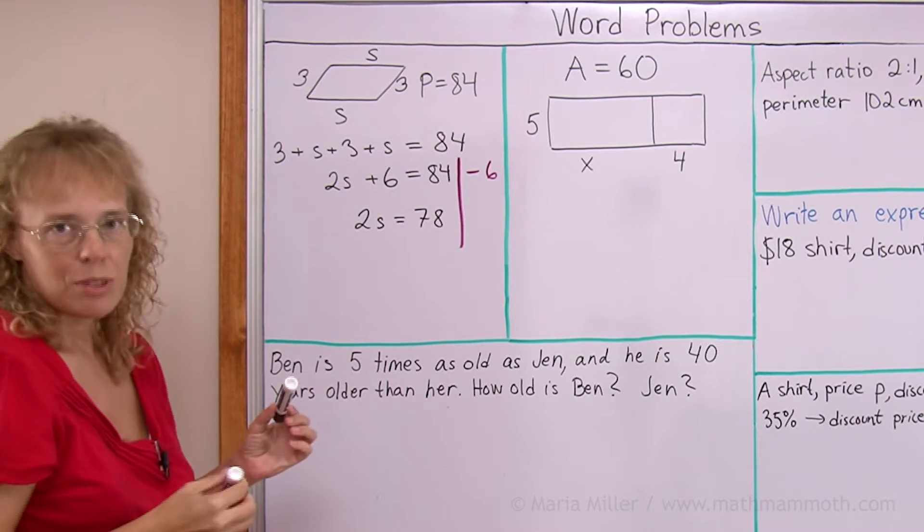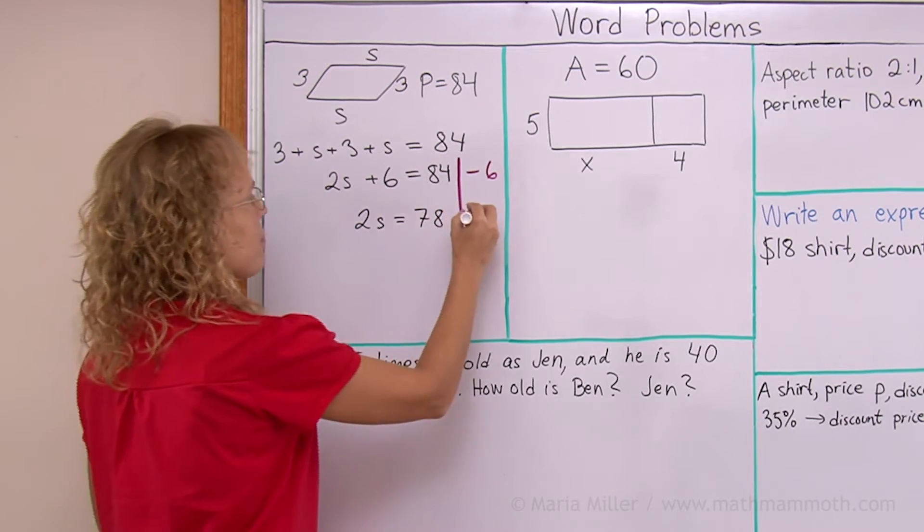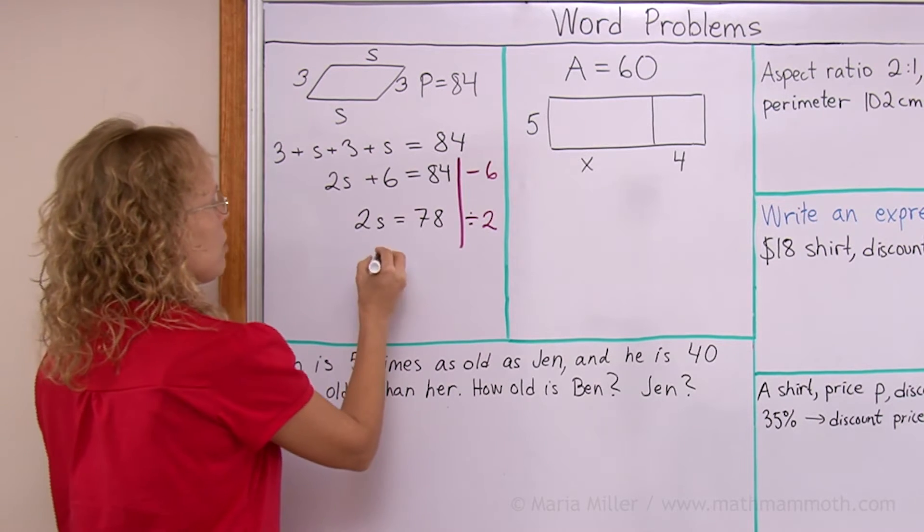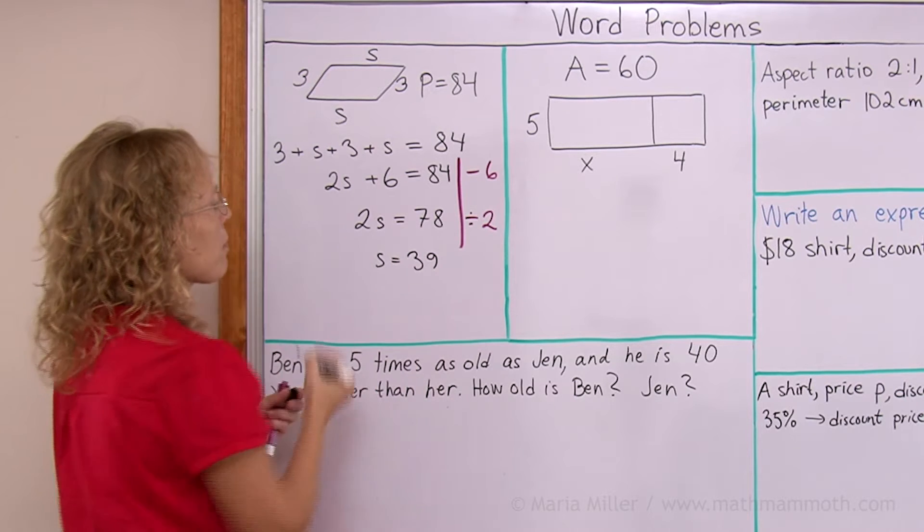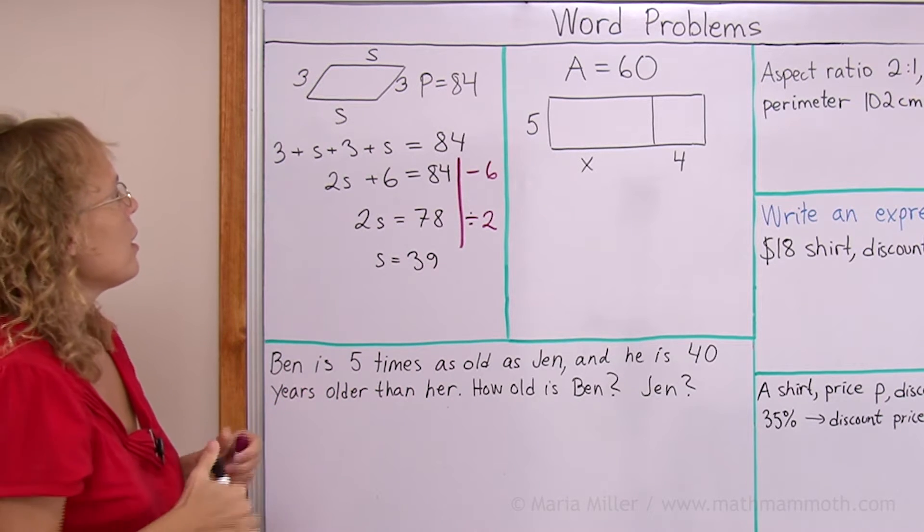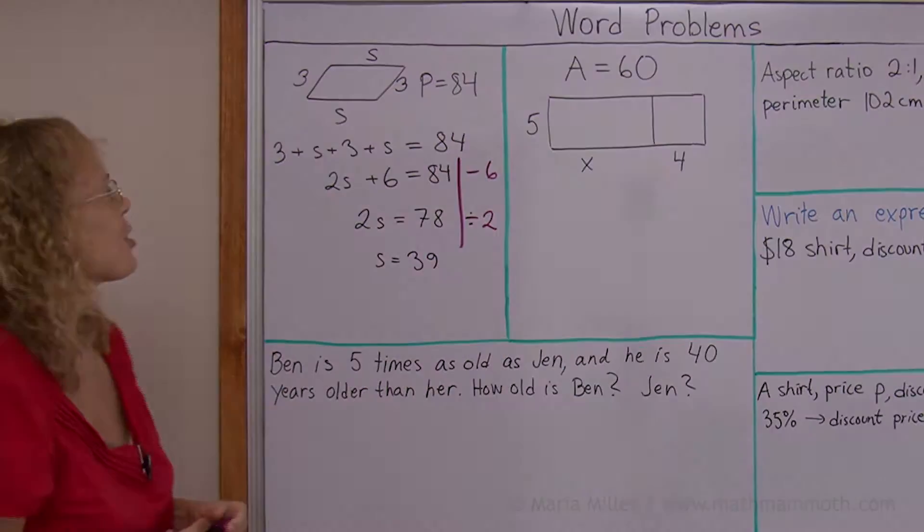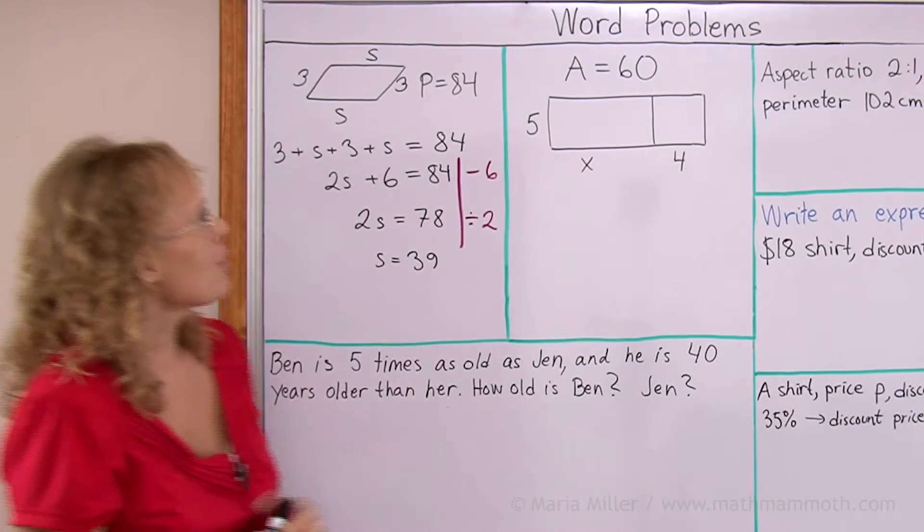And now, divide both sides by 2. So we get s equals 39 units. And that makes the parallelogram much longer this way than what I drew, of course. Now, let's go on.